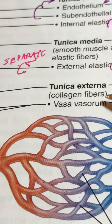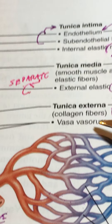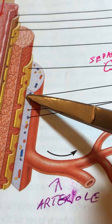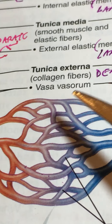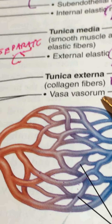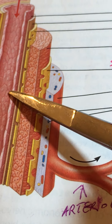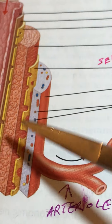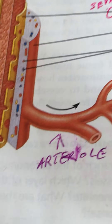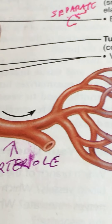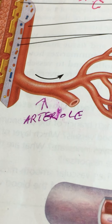The tunica externa is largely dense irregular connective tissue with some loose connective tissue. It also contains the vasa vasorum — small arteries and veins that serve the blood vessel wall itself — because the vessel's own cells acquire nutrients and oxygen from these perfusive pathways rather than from the lumen. This gives way next to the arteriole, which is much smaller but similar in some ways, covered in the next section.